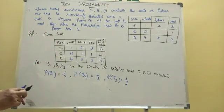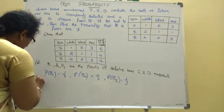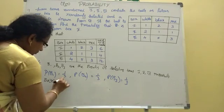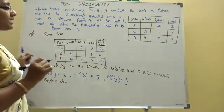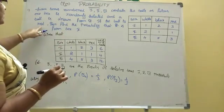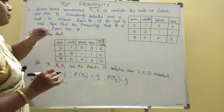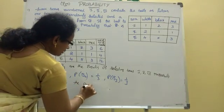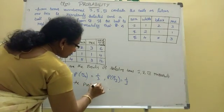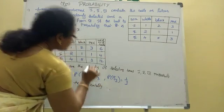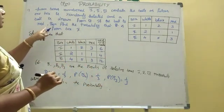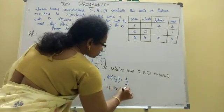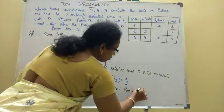Using the Bayes theorem. If the ball is red, find the probability that it is from box two. We need P(B2 | R) — the probability that the red ball came from box two.